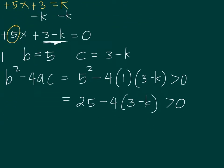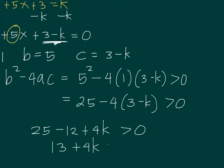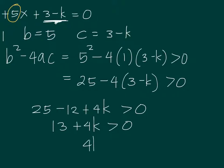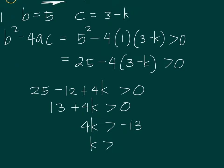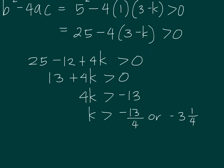Simplifying, we get 13 plus 4k greater than 0. Solving this inequality: 4k is greater than negative 13, so k is greater than negative 13 over 4, which is negative 3 and 1 fourth. This means the value of k cannot go smaller than negative 3 and 1 fourth — k must be strictly greater than negative 13 over 4.